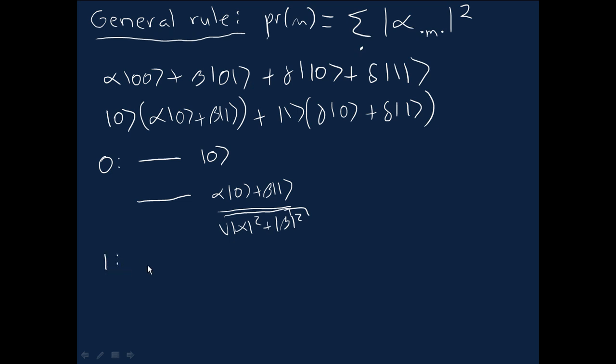In the same way, the posterior state if we get measurement outcome 1 for our two-qubit system, I'm sure you can guess: here we get state 1, and here we get this state gamma 0 plus delta 1. But again, it's normalized by the square root of gamma squared plus delta squared. These are both valid quantum states.